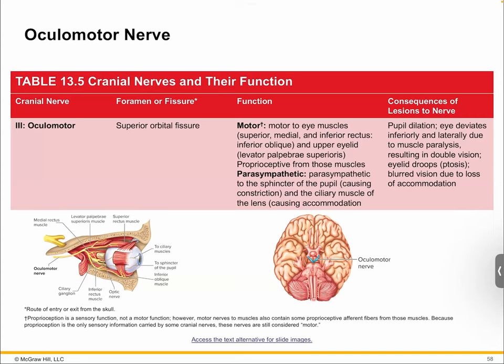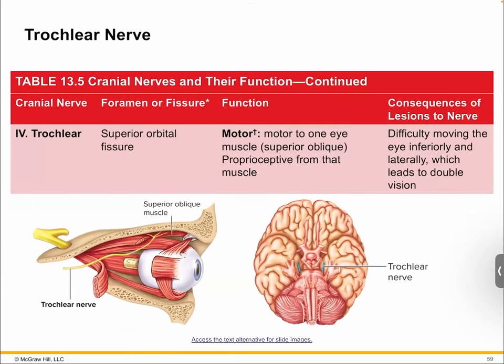Oculomotor is number three. When you take a look at oculomotor, it's obviously a motor thing — this is associated with eye muscles and reflexes. It will actually control those pupil reflexes. Number four is your trochlear, which is also a motor nerve to the eye.